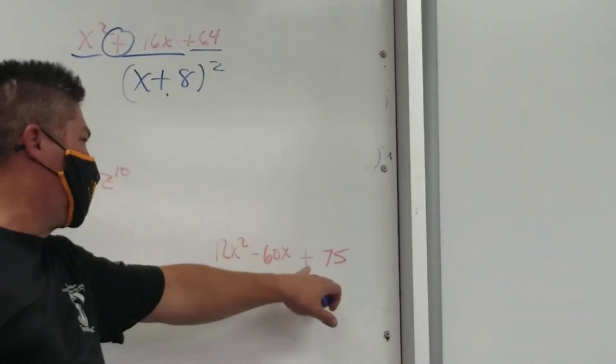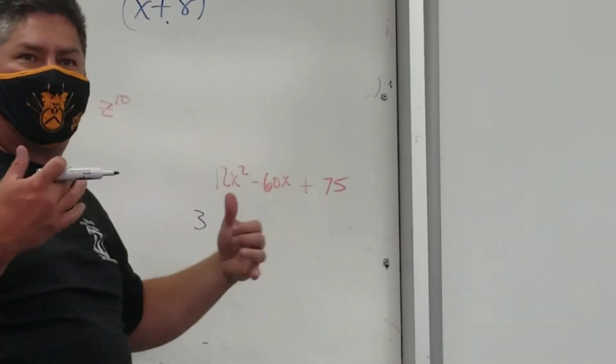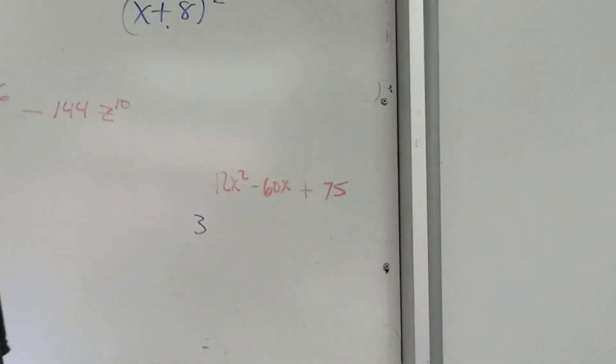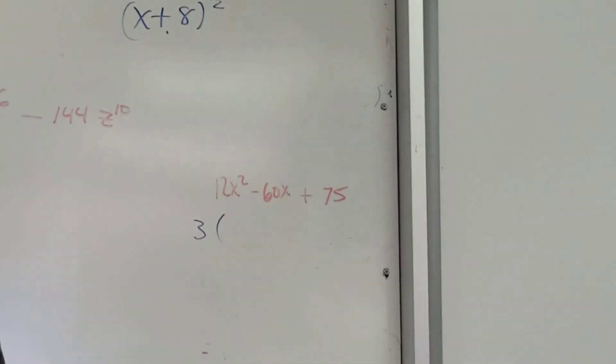So 1 plus 2 is 3. 6 plus 0 is 6. 7 plus 5 is 12. All those are divisible by 3, right? Those sums. So therefore, all these are divisible by 3. I might not know what it is at this point, but that's okay. What is it?